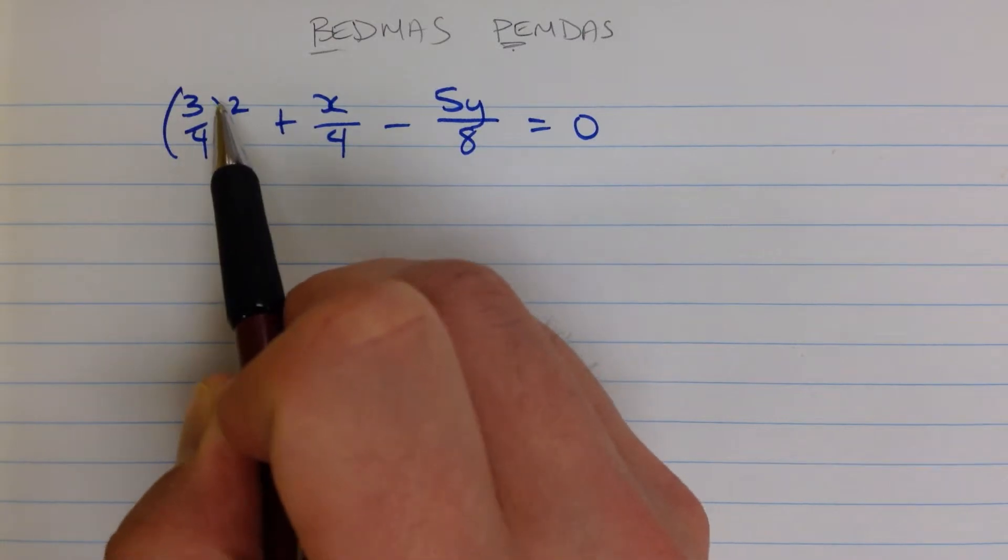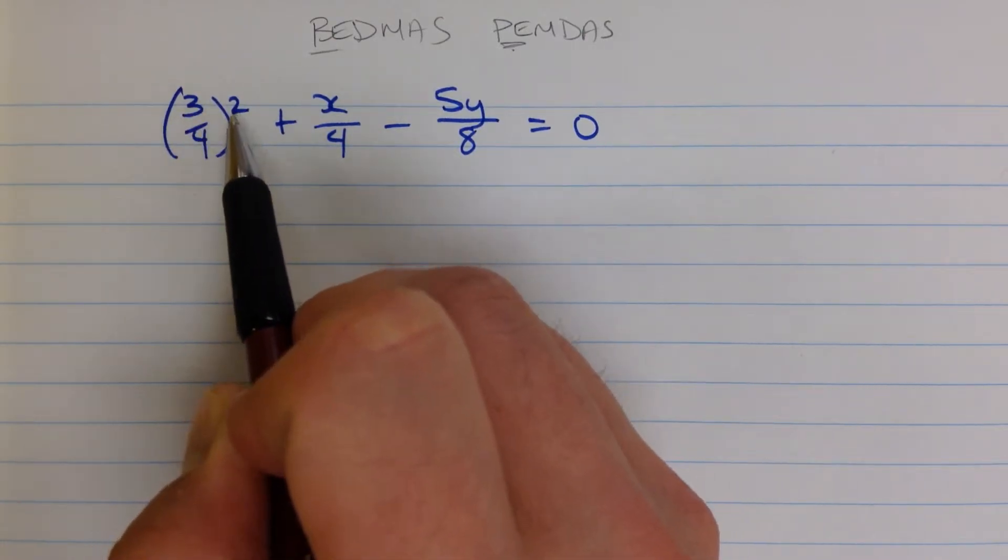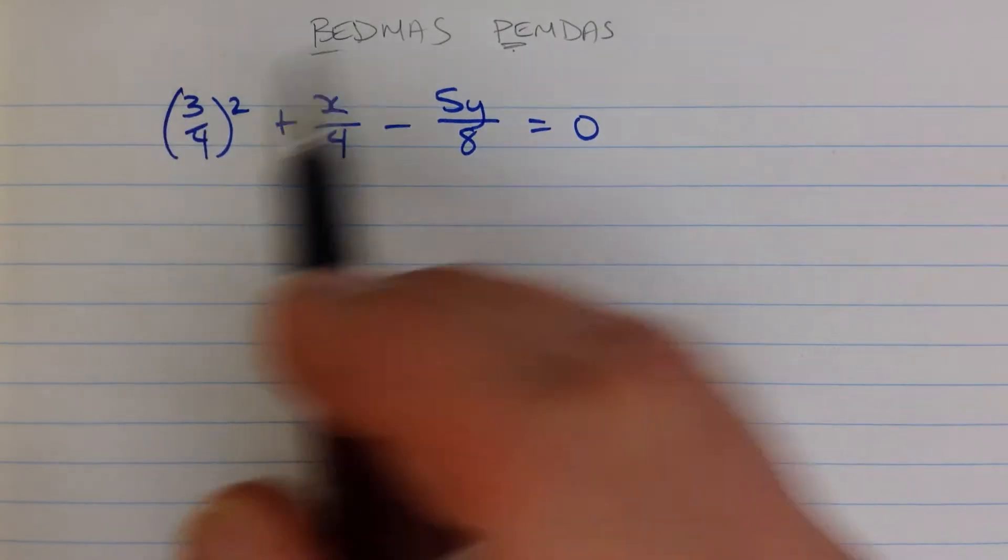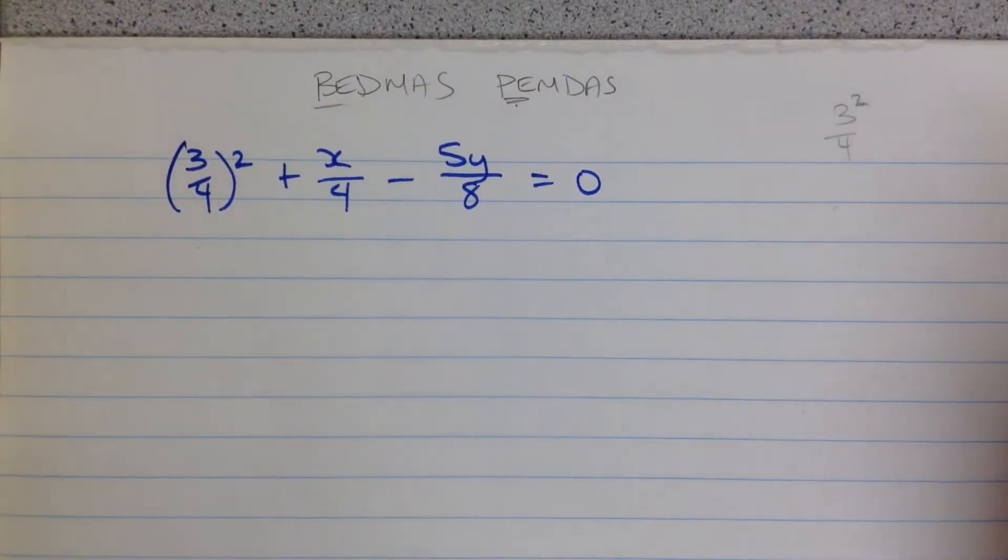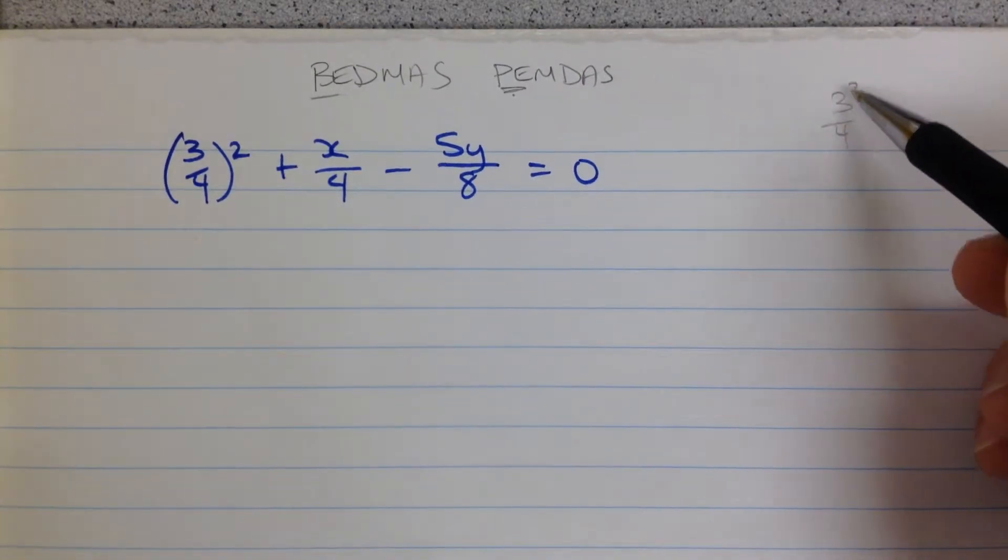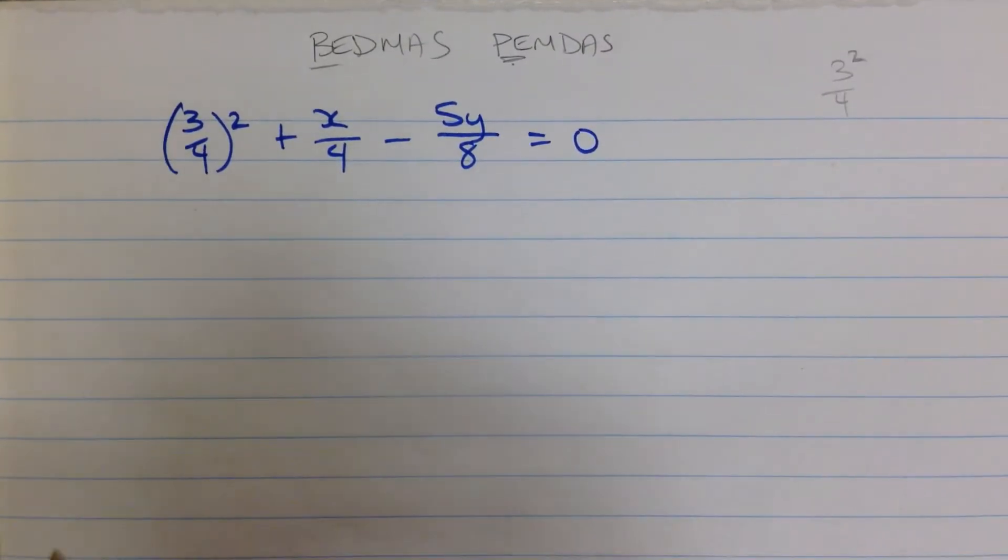The only reason we have brackets here is to show where the squaring applies. This is 3 quarters squared. It's not just 3 squared, for example, which if I wrote 3 quarters squared, you might be confused about whether the whole thing is squared or just 3. So the brackets make that clear.